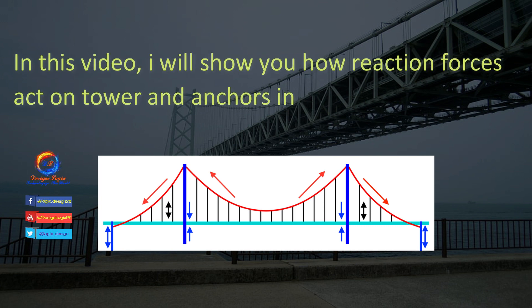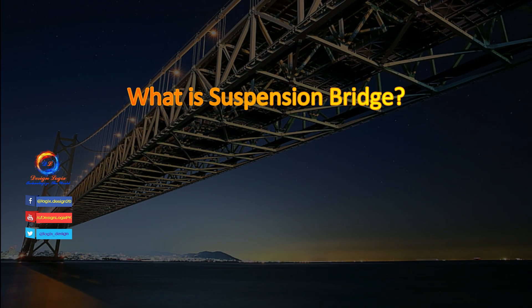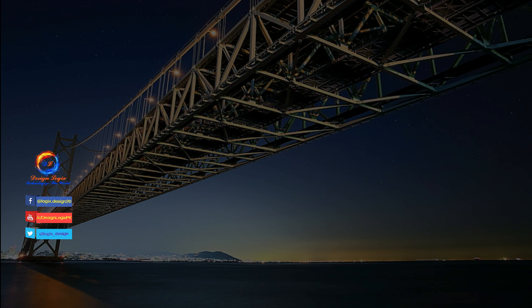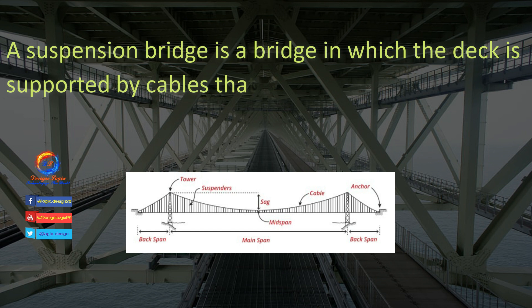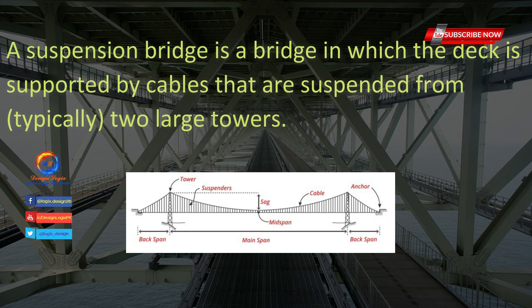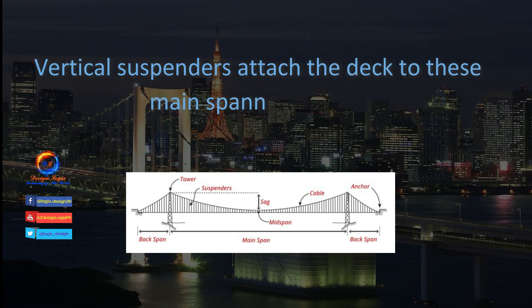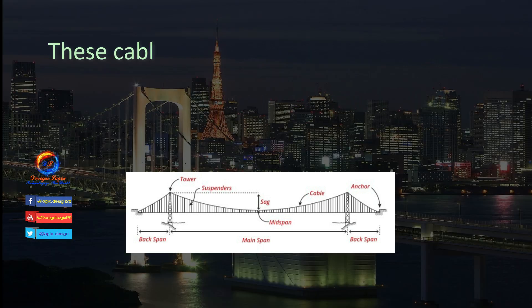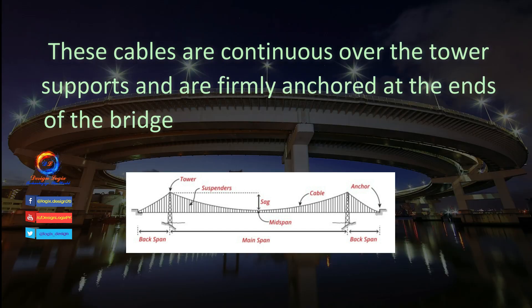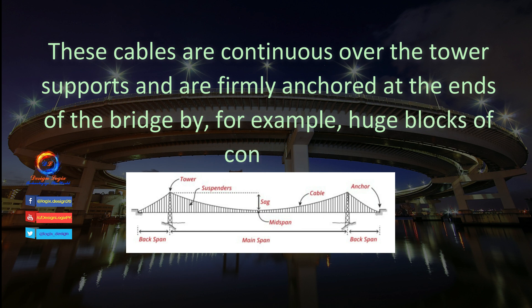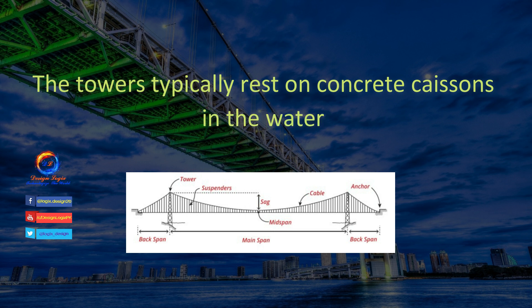What is a suspension bridge? A suspension bridge is a bridge in which the deck is supported by cables that are suspended from typically two large towers. Vertical suspenders attach the deck to these main spanning cables. These cables are continuous over the tower supports and are firmly anchored at the ends of the bridge by, for example, huge blocks of concrete. The towers typically rest on concrete caissons in the water.